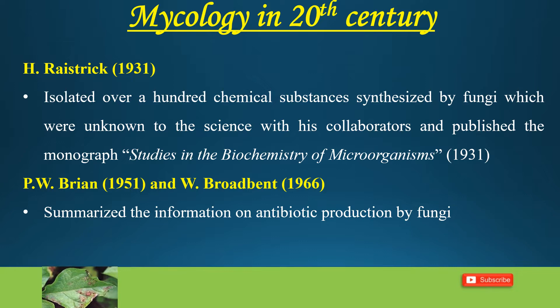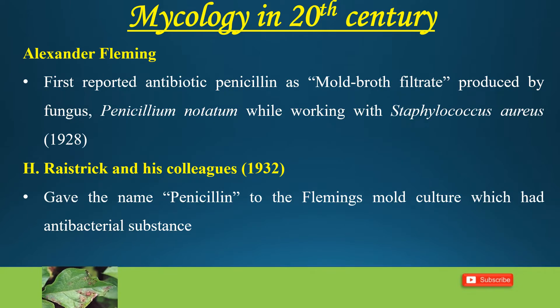Brain and Broadbent summarized the information on antibiotic production by fungi. The most important discovery in the 20th century was the penicillin antibiotic. While Alexander Fleming was investigating the destruction of Staphylococcus aureus by leukocytes in the laboratory, he observed that there was a zone of dead Staphylococcus cells around the circumference of the colony of Penicillium.